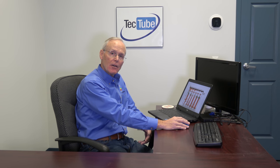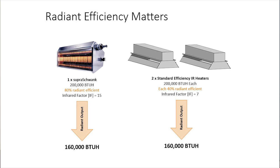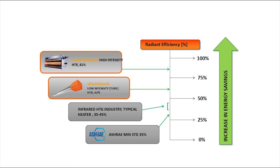High intensity is direct vent, so you will need some sort of mechanical exhaust, but you don't have a flue to size — so you can save on equipment costs, installation costs, and energy costs. What that means is if you have one of these high intensity units with an infrared factor of 15, that gives you 160,000 BTUs — you'd have to have two of the standard high intensity radiant infrared units to get the same input capacity and temperature. The industry standard from ASHRAE 1330 is 35 percent; typically high intensity in the industry is 35 to 40 percent. The Schwenk tubular units reach 62 percent, and their Super Schwenk reaches 81 percent — so you have increasing energy savings as you go up with radiant efficiency.